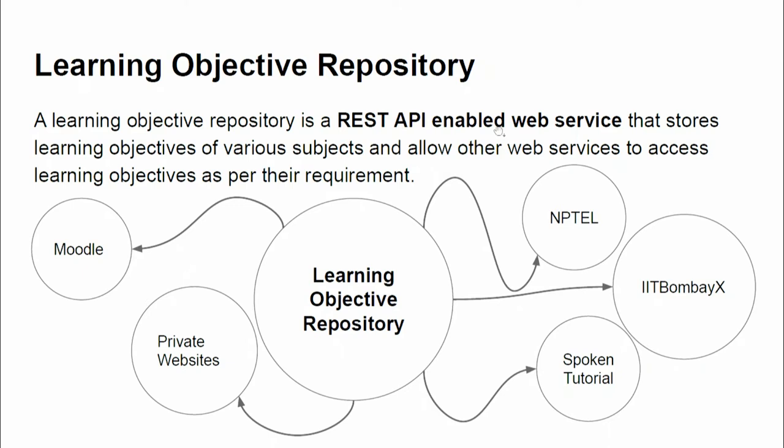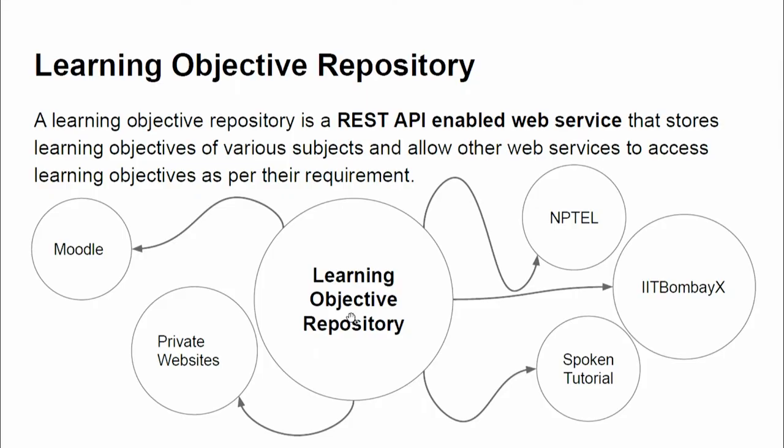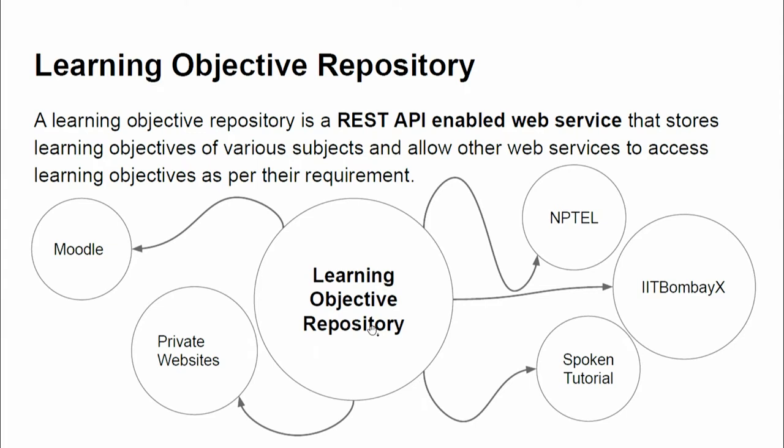For example, you know about NPTEL, IIT Bombay X, and Spoken Tutorial — these three are already somehow related to IITs, and we have a lot of tutorials on them. So if we have a centralized learning objective repository, these systems — NPTEL, IIT Bombay X, Spoken Tutorial — will fetch learning objectives from here rather than writing their own. NPTEL could write their own, but then IIT Bombay X would not be able to use them, while both are teaching the same courses. One topic can be taught by any number of teachers, and all teachers can use the same learning objectives.